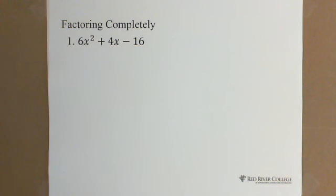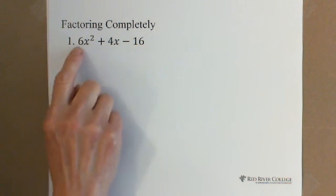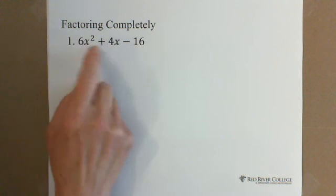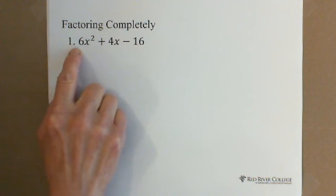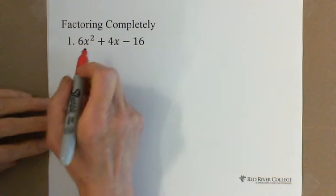Factoring completely for question 1: 6x squared plus 4x minus 16. This is a trinomial, but when we look at the question, we find there is a common factor with 6, 4, and 16. Before we do factoring, we need to pull the common factor out. The common factor is 2.